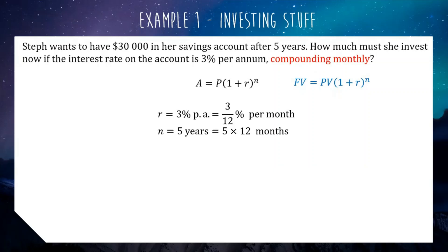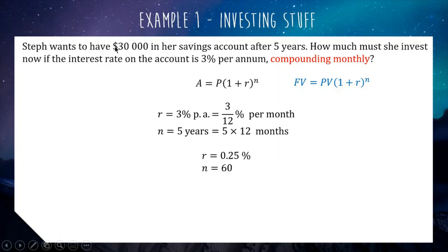So we end up with 0.25% per month for our interest rate and a time period of 60 months. Now that we know that, we can substitute into our formula. But you have to be careful because for this question we aren't actually finding the final amount — we've already been given the final amount of $30,000. We're trying to find out how much to invest now; we're trying to find the principal, P. So when you're substituting in $30,000, it goes in for A, not for P.